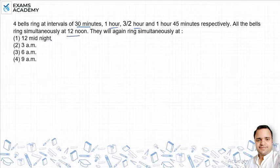They will again ring simultaneously at - 4 options. What is the question? The question is that 4 bells are at an interval of time interval. For example, the first bell is 30 minutes.